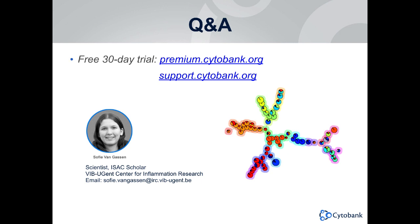Another question: is it possible to upload multiple files to one run of FlowSOM? If so, is there a way to analyze the sample of origin of each meta-cluster? The answer is yes — you are able to run multiple files in one FlowSOM run in Cytobank. And since we generate a new experiment with all the original FCS files including the original marker channels plus FlowSOM meta-cluster and cluster ID channels, you will be able to analyze the sample of origin of each meta-cluster. So that's possible inside Cytobank.